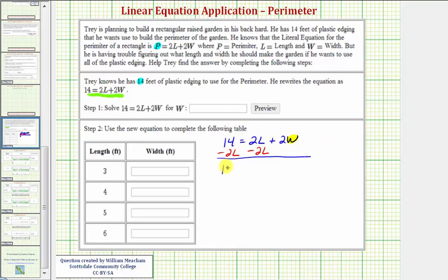Notice on the left side we have 14 minus 2L. And now on the right side this is zero. So we have 14 minus 2L equals 2W. 2W means 2 times W. So to undo this multiplication and solve the equation for W, we'll divide both sides by two.